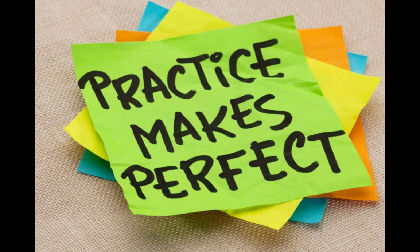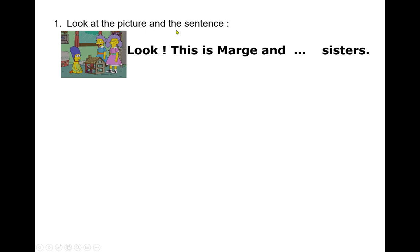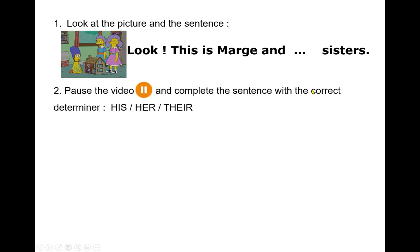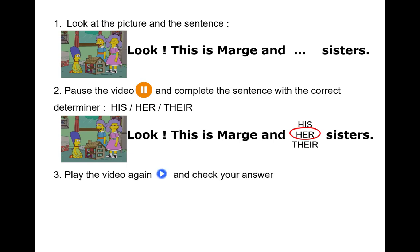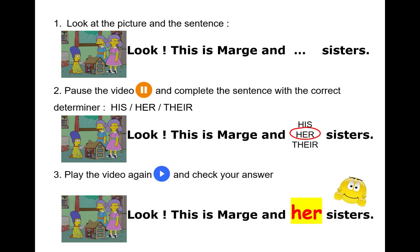Let's practice. Look at the picture and the sentence: 'This is Marge and ... sisters.' Pause the video and complete the sentence with the correct determiner: his, her, or their. The answer is: this is Marge and her sisters. Her sisters — that's right!